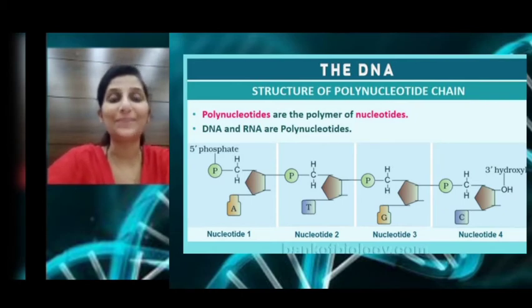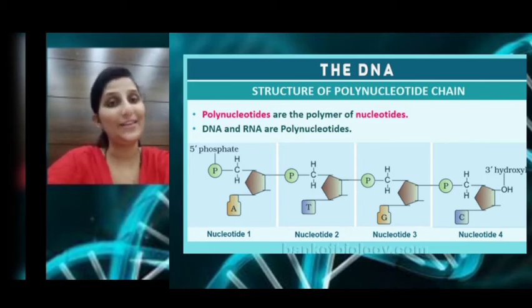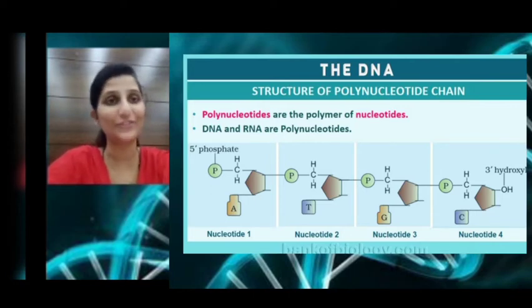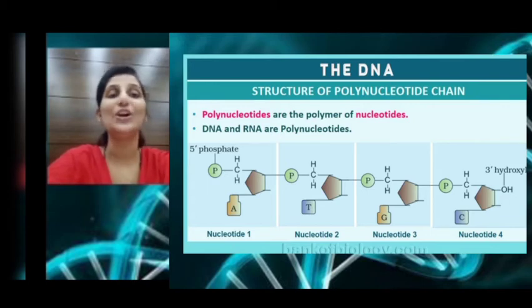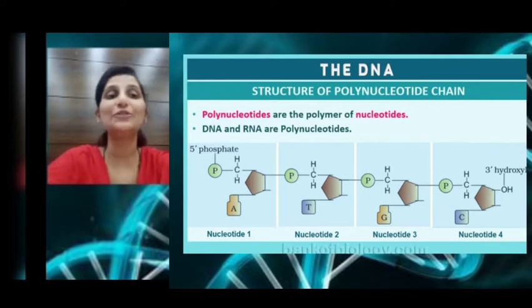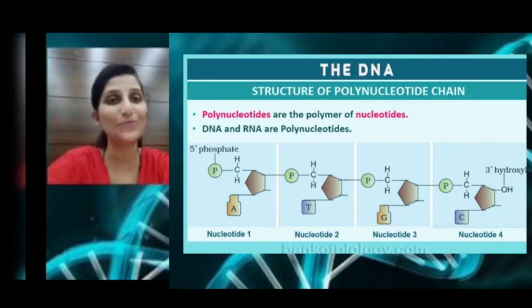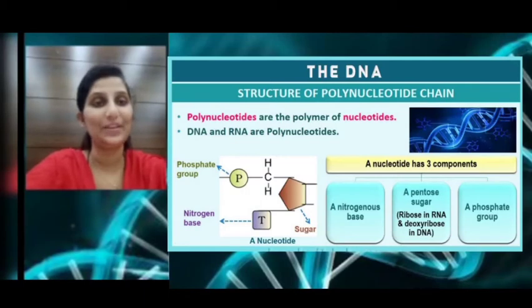It is believed that DNA is the most interesting molecule in the living system, so it is really amazing to learn the structure of DNA. The DNA is a polynucleotide chain — it is made up of repeating units called nucleotides. The monomer is a nucleotide, and these monomers are joined together to form a polynucleotide. So DNA is a polymer of nucleotides, and both DNA and RNA are polynucleotides.